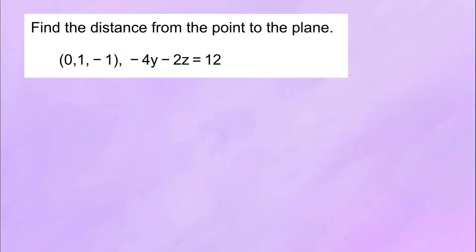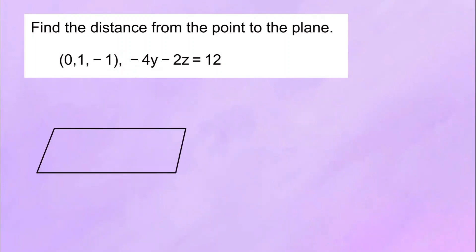When we say distance, we do want to mention that it's the shortest distance from the point to the plane. So let's pose an illustration. Here I have a plane and we want to find the distance. Let's say this is the point — let's call it P, with coordinates (0, 1, -1). And we want to find this distance right here — let's call it D.